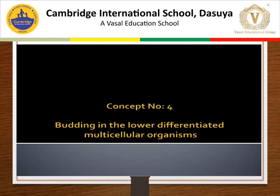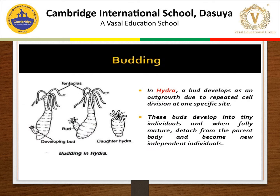Budding occurs in lower differentiated multicellular organisms. Organisms such as Hydra use regenerative cells for budding. In Hydra, a bud arises from the body surface as an outgrowth. This bud enlarges and develops tentacles. The fully formed bud then separates from the parent body and starts an independent life. In budding, a bud develops as an outgrowth due to repeated division at one specific site, develops into a tiny individual, and the fully matured individual detaches from the parent body.